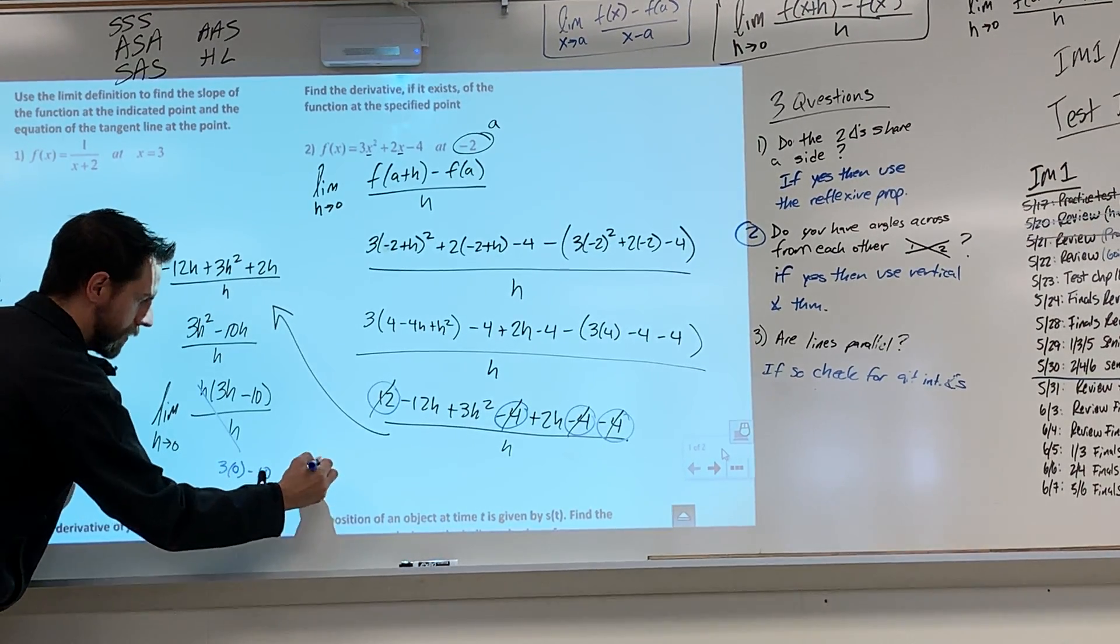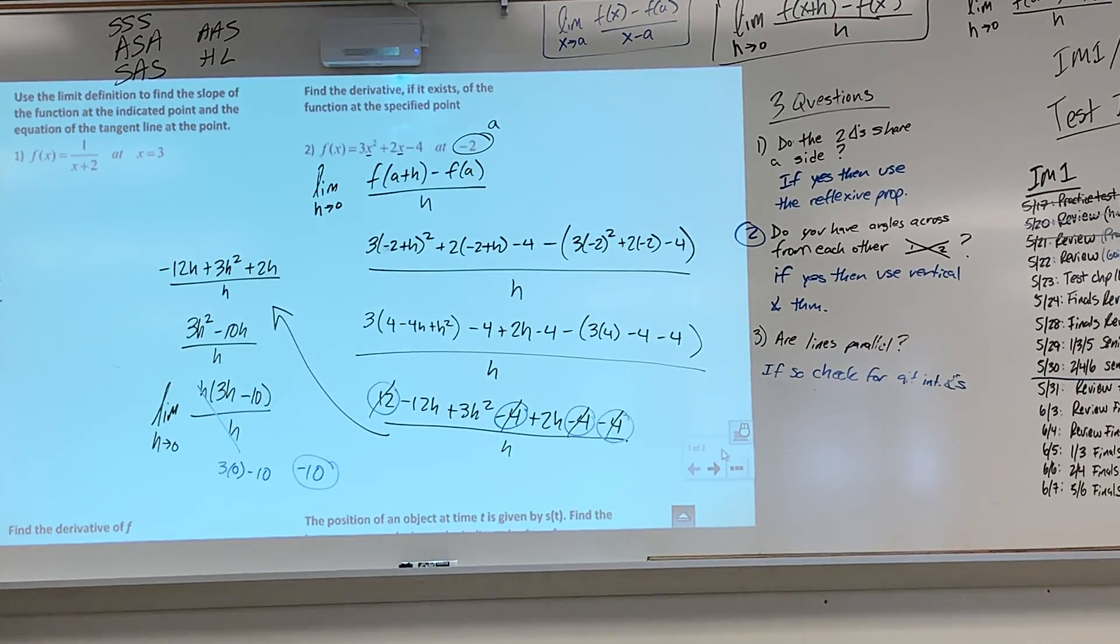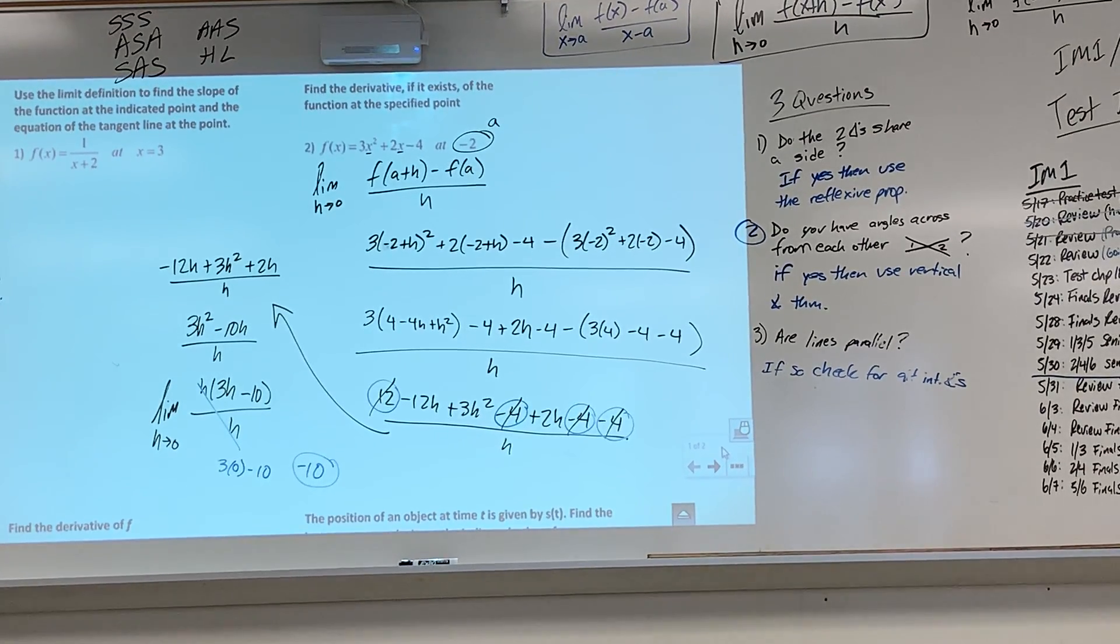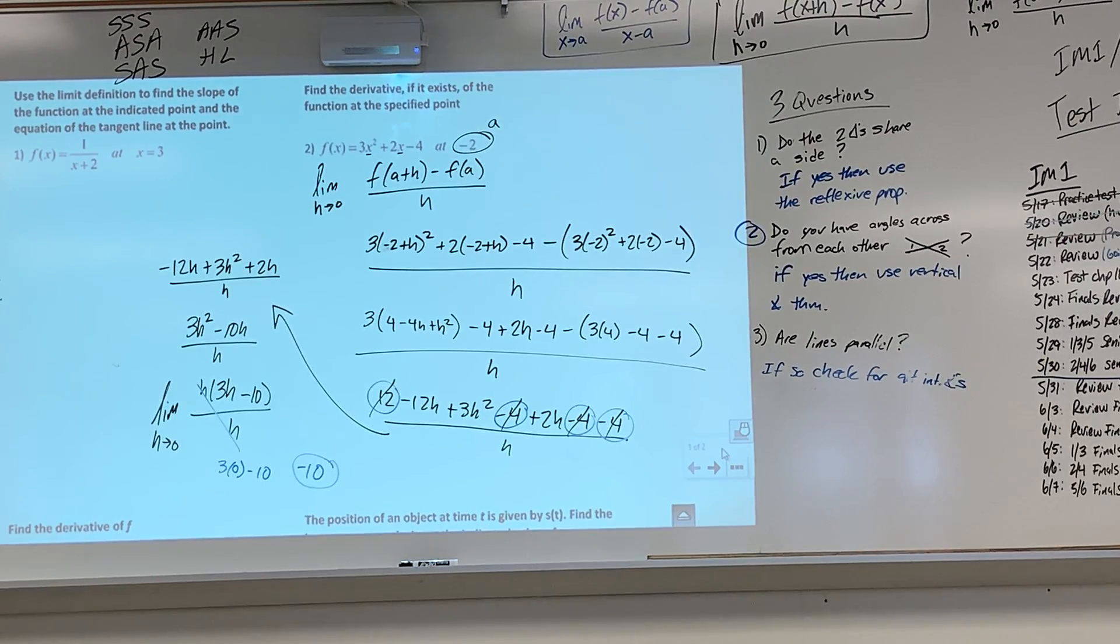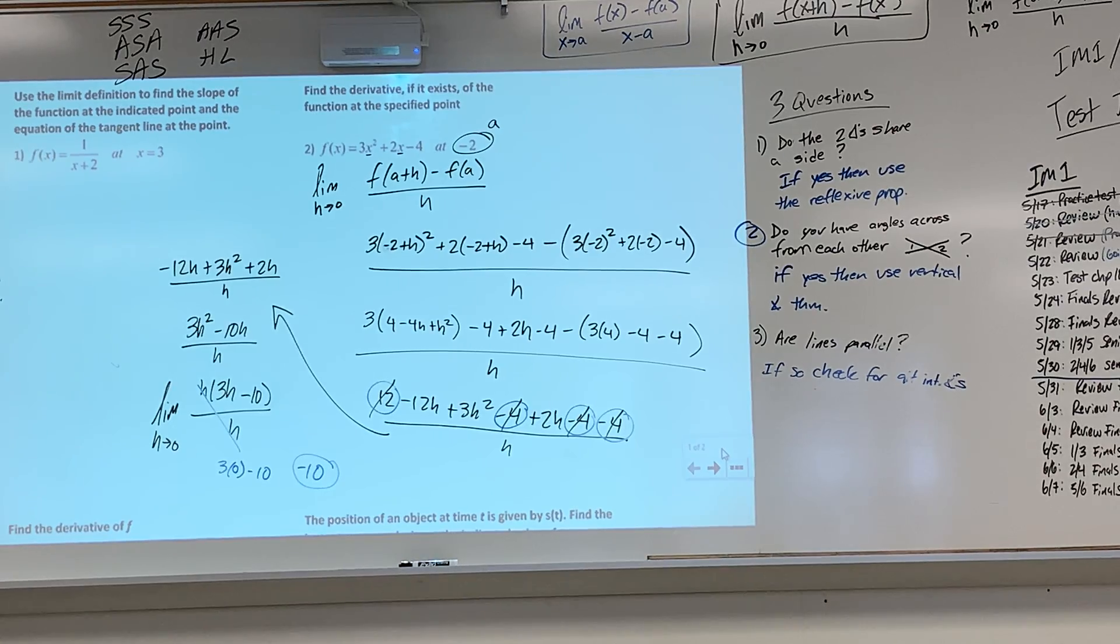So my answer is negative 10 to the train. So find the derivative if it exists at a specific point. We found the derivative if it existed at negative 2, and it is negative 10.